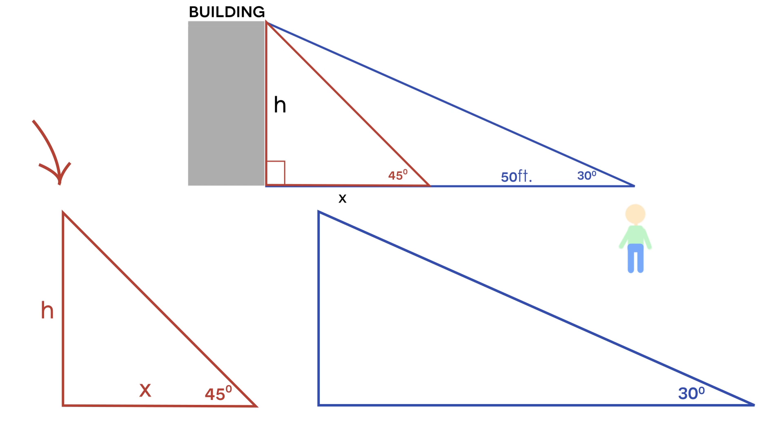We know, since this is a 45 degree right triangle, that the angle at the top of the building is also going to be 45 degrees, because all of the angles of this triangle must equal 180.